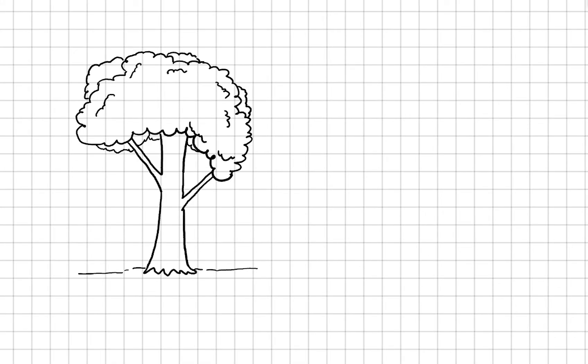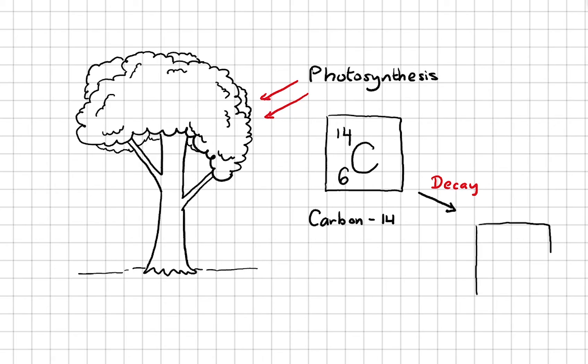In the process of photosynthesis, trees absorb the element called carbon-14. Carbon-14 is a radioactive element, which means it will decay into another element after a certain amount of time. The element that carbon-14 decays into is nitrogen.